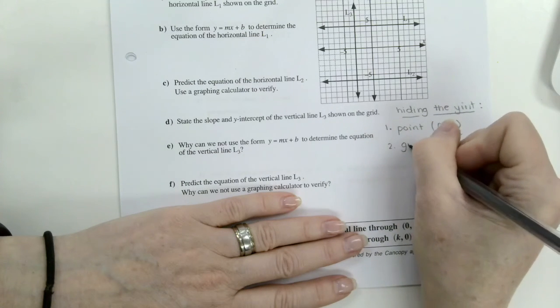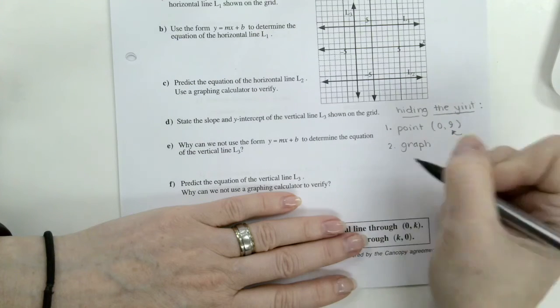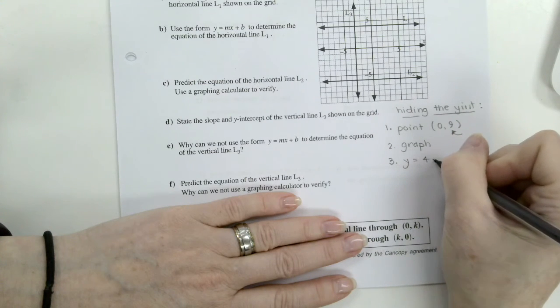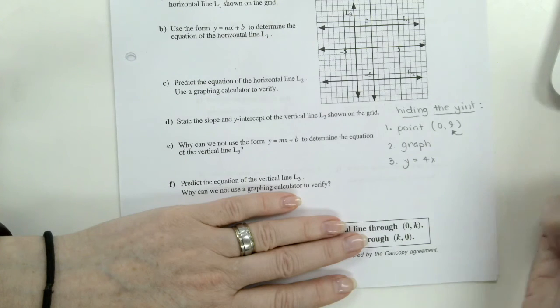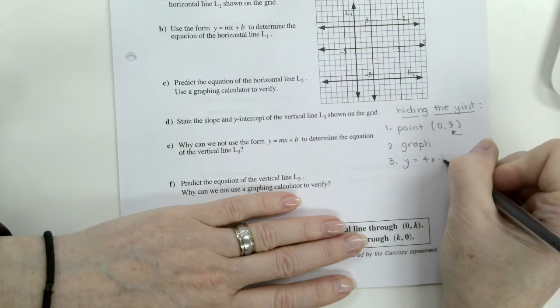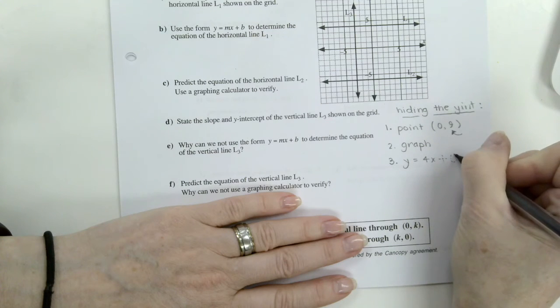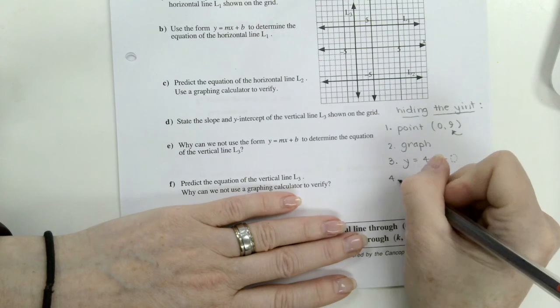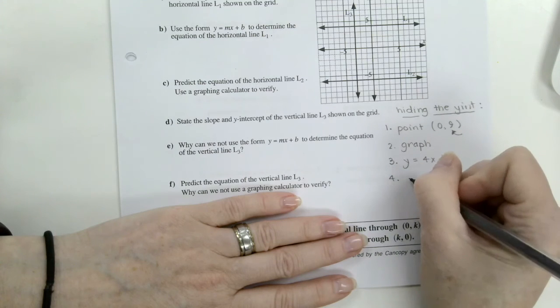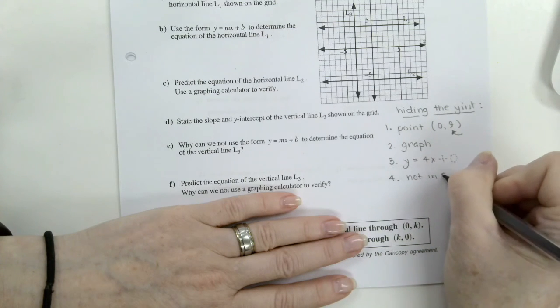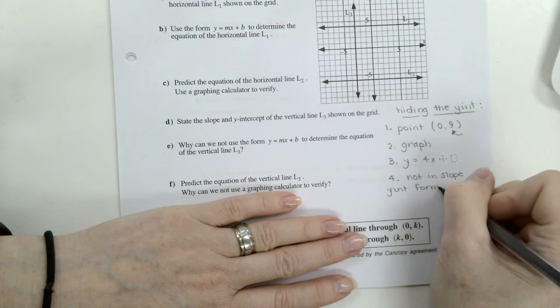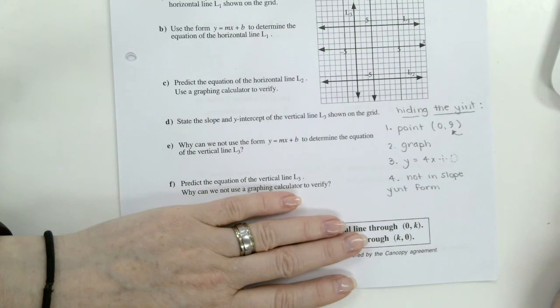Number three. It might be invisible. So you could have y equals 4x. And then our y-intercept would be this invisible plus 0 here at the end, which we never read in. And number four. They might not have it in slope y-intercept form. So in that case, you would move it back to a y equals. And then you would easily be able to see what the y-intercept was from there.